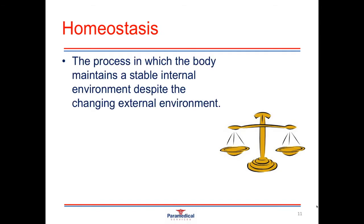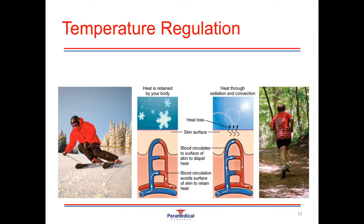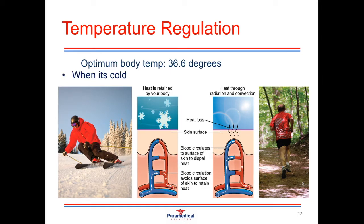Homeostasis is the process in which the body maintains a stable internal environment, despite the ever-changing external environment. Homeostasis helps us to regulate things like our body temperature, fluid levels, and acidity levels. The optimum body temperature ranges between 36.6 degrees and 37 degrees Celsius.